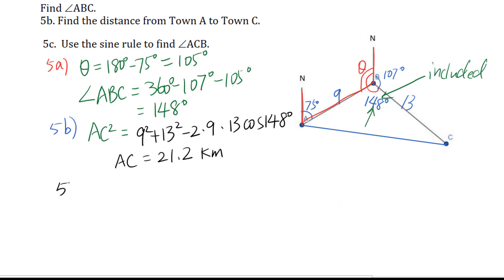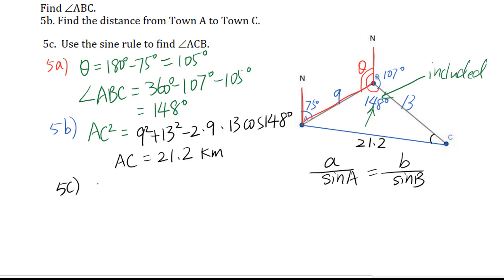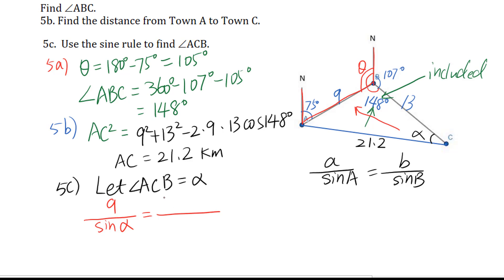Now let's go to 5C: use the sine rule to find angle ACB. ACB is this angle, and we know AC is 21.2 kilometers. For the sine rule: A over sine A equals B over sine B — corresponding side over corresponding angle. Let angle ACB equal alpha. The corresponding side for alpha is 9, so we get 9 over sine alpha equals 21.2 over sine 148 degrees.